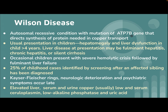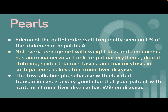Wilson disease: an autosomal recessive condition with mutation of the ATP7B gene, which directs synthesis of a protein needed for copper transport. Usual presentation in children is hepatomegaly and liver dysfunction in children over four years. Liver disease at presentation may be fulminant hepatitis, chronic hepatitis, or silent cirrhosis. Occasional children present with severe hemolytic crisis followed by fulminant liver failure. About 25% of childhood cases are identified by screening after an affected sibling is diagnosed. Kayser-Fleischer rings, neurological deterioration, and psychiatric symptoms occur late. Labs show elevated liver, serum, and urine copper; low serum ceruloplasmin; and low alkaline phosphatase and uric acid.